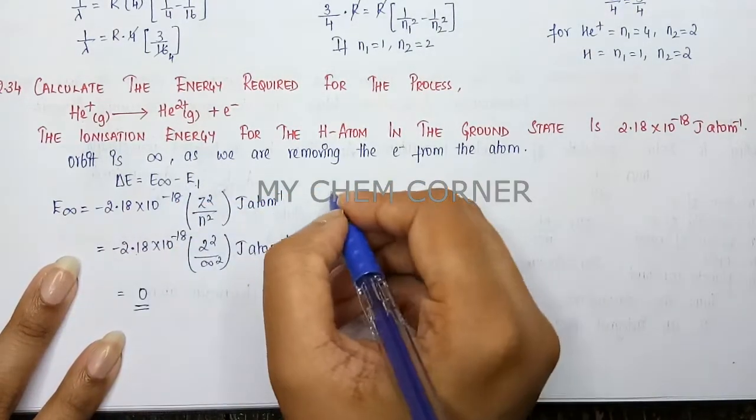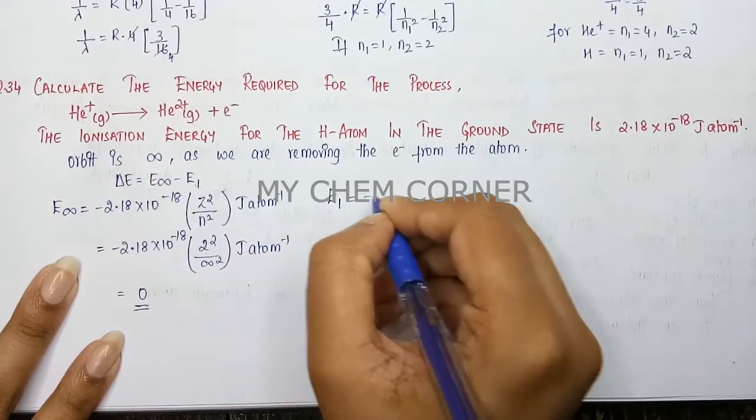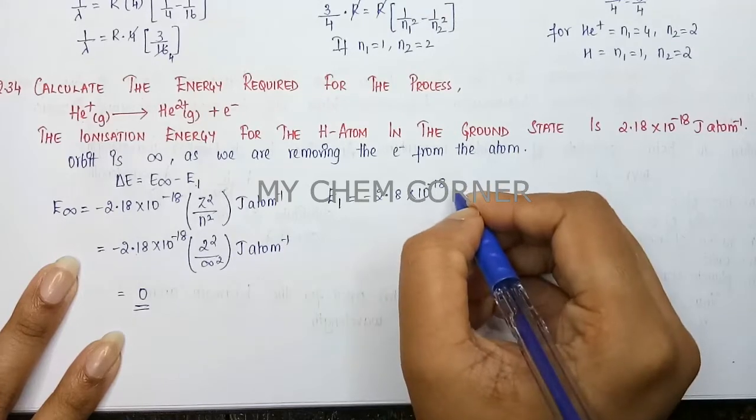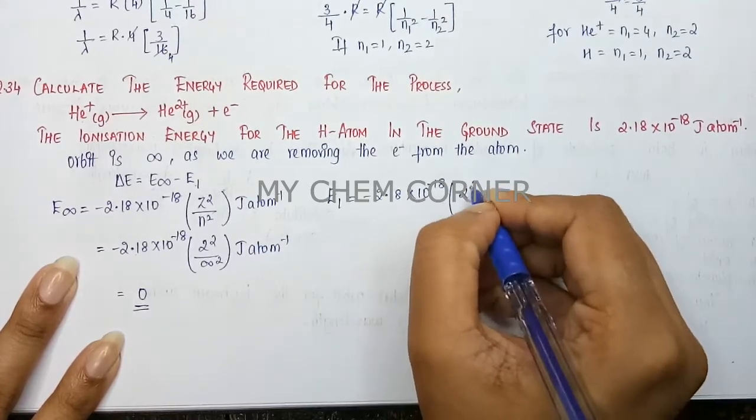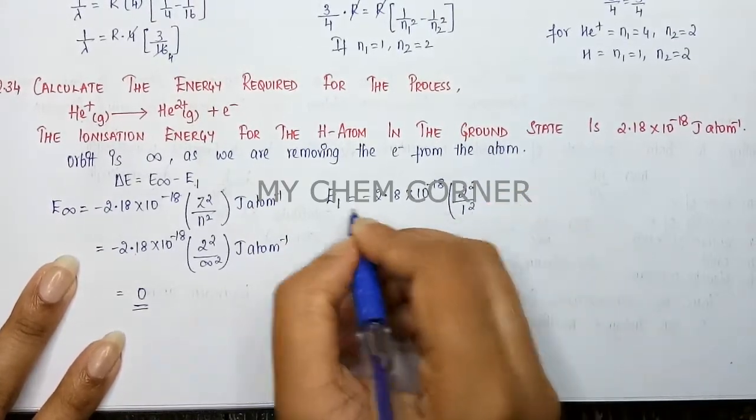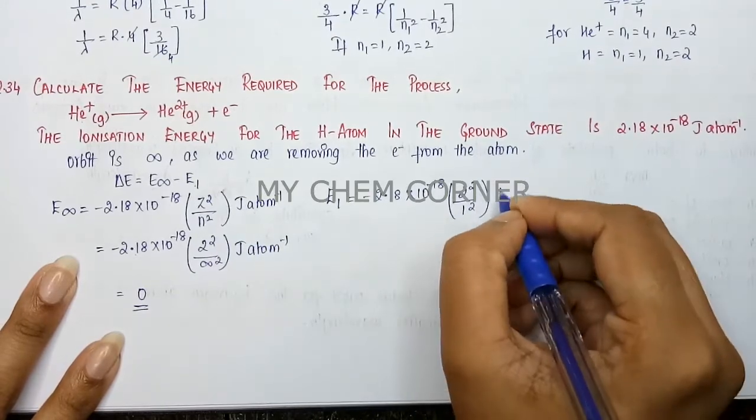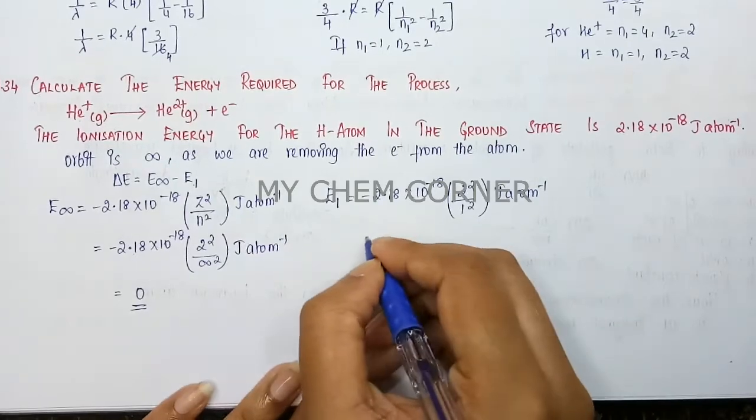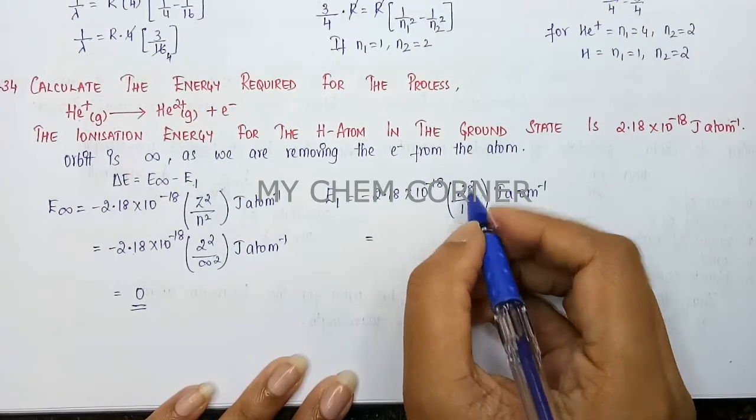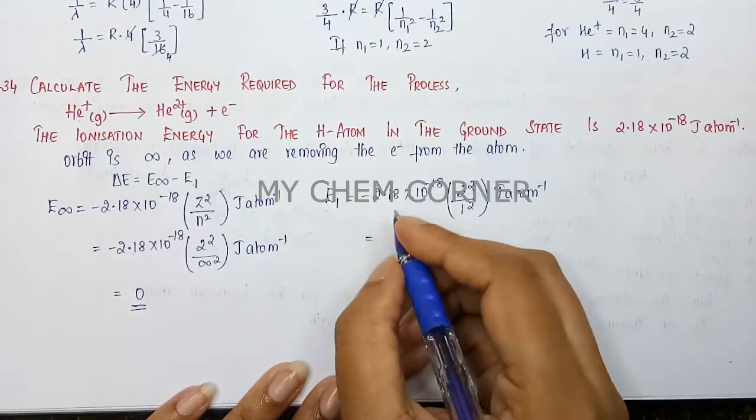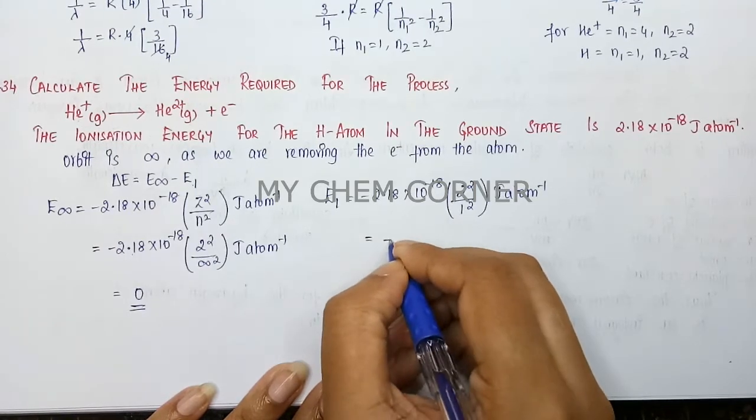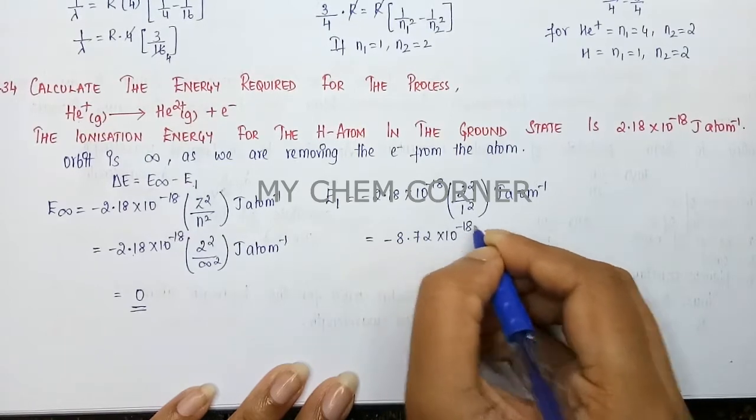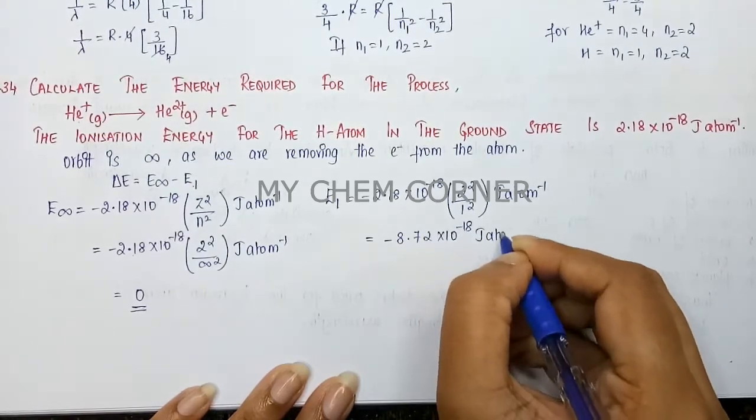Let's calculate E₁. E₁ is -2.18×10⁻¹⁸ multiplied by Z²/n². Z² is still 2², and n² is 1² because the state is 1. When I simplify, 2² is 4, and 4×2.18 gives -8.72×10⁻¹⁸ joules per atom.